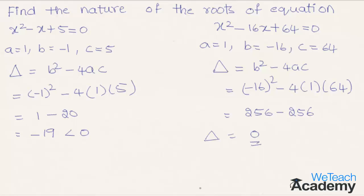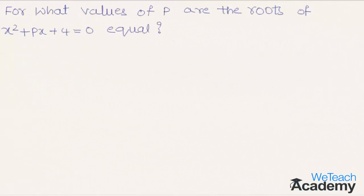Now let us solve another example. For what values of p are the roots of the quadratic equation x squared plus px plus 4 equal to 0 equal? We already know that when the roots of a quadratic equation are equal, the value of delta is equal to 0.